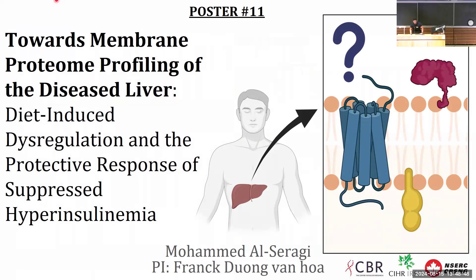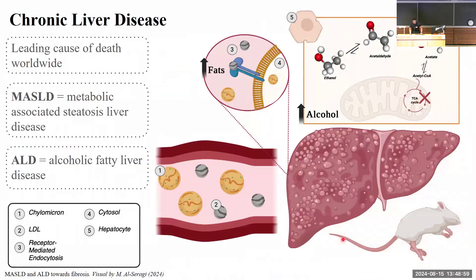My name is Mohamed El-Saraji from the Frank Duong lab, and I'll be presenting research towards membrane proteome profiling of the diseased hypoinsulinemic liver. High-fat and high-alcohol consumption go hand-in-hand in the Western diet, and both work to potentiate chronic liver disease. MASLD and ALD are two categories of chronic liver disease — the former driven primarily by a high-fat diet and the latter by a high-alcohol diet. While pathologically very similar, ALD and MASLD are etiologically distinct, meaning few studies exist at the intersection of these two conditions.